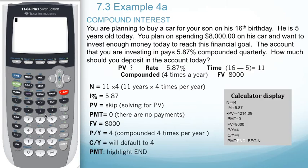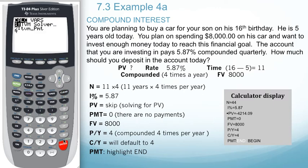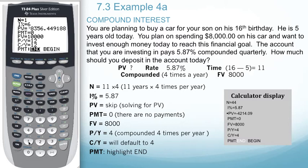Let's look at how to enter this into the TVM solver. Go to the apps button, hit enter for finance, and enter for TVM solver. We want to determine N by taking the number of years, which is 11, times the number of compounding periods, which is four. Arrowing down to the interest rate, you can see that N will be 44.